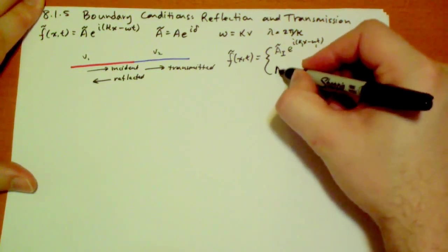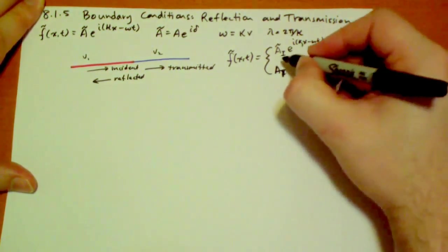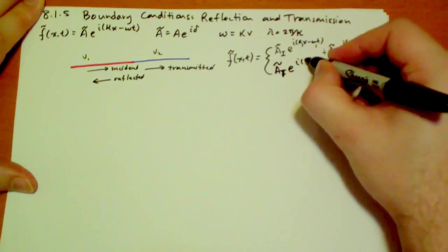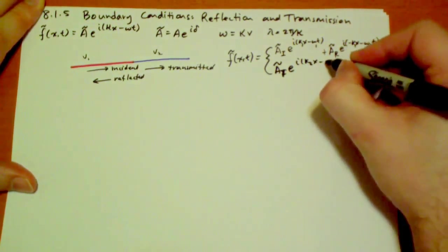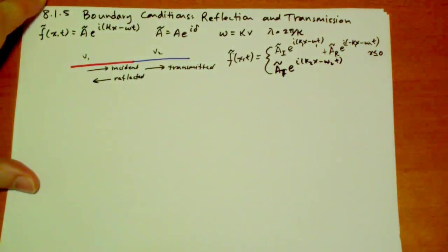And then on the right side, we're going to have the transmitted wave, e to the i kappa 2 x minus omega 2 t.